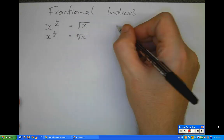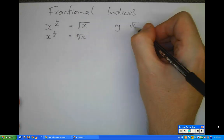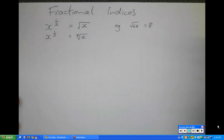So for example, the square root of 64 equals 8, because 8 times 8 equals 64.